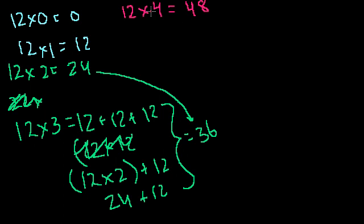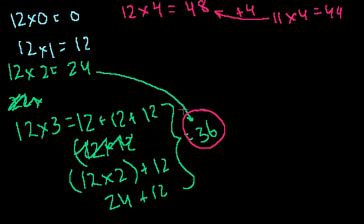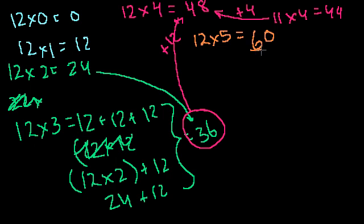12 times 3 is going to be 12 plus 12 plus 12, or we could rewrite that as 12 times 2 plus 12, or as 24 plus 12. Either way, all of these get us to 36. Notice that's just that plus 12. 12 times 4 is equal to 48. There's a lot of ways you could think about it. You could say 11 times 4 is 44, and you go up by one more 4, so you get to 12 times 4. Or you could say 12 times 3 is 36, and you could add 1 twelve to it to get to 48. Either way works. 12 times 5 is equal to 60.